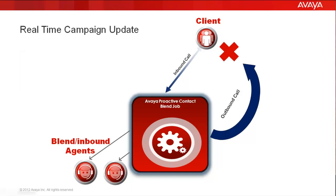It is not applicable to the predictive agent blending type of setup where the inbound calls are handled by the ACB. The real-time campaign update feature is typically used where you have customers calling into the inbound by themselves, and so you want to be able to tell the Proactive Contact to not make an outbound call to that customer again. When an inbound call is received on the Proactive Contact by a blend or an inbound type agent working on a blend job, the agent can mark that customer's record as uncallable on the outbound calling list associated to that blend job.